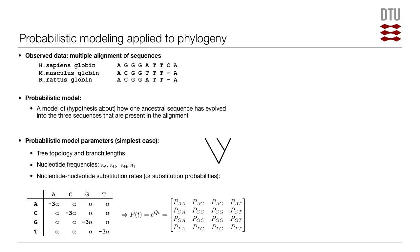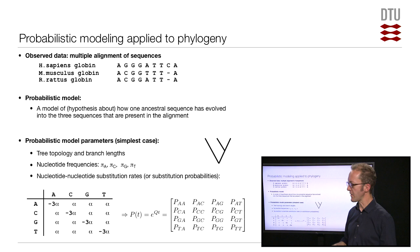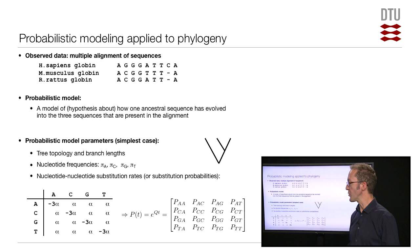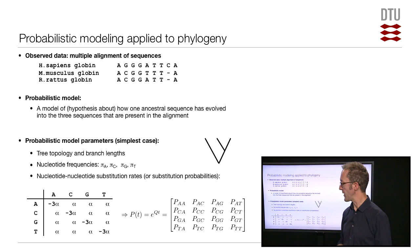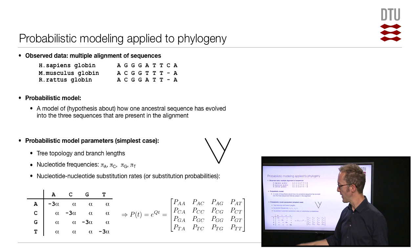The model — the hypothesis we have and are trying to estimate parameters for — is a model of how one ancestral sequence has evolved into the sequences we have in our dataset. That model includes, as its parameters: the tree shape, the branch lengths (which reflect how many mutations have occurred on each branch), nucleotide frequencies, and nucleotide-nucleotide substitution rates. From a substitution rate, it's possible to compute a substitution probability for any particular time span t.